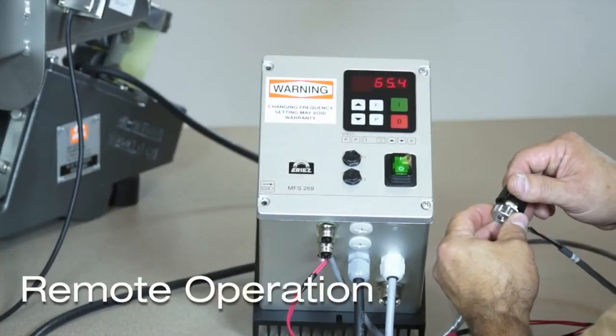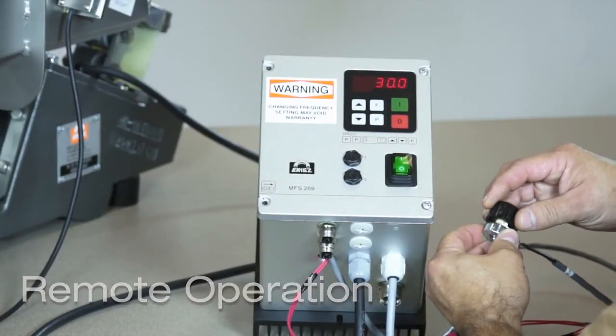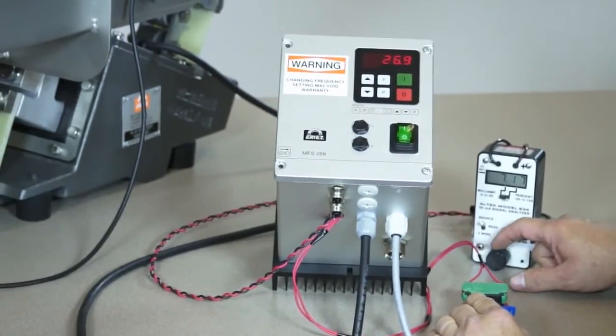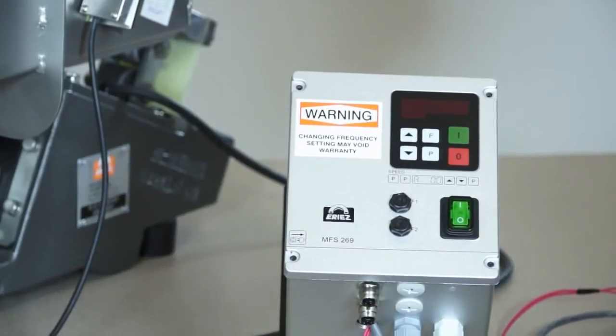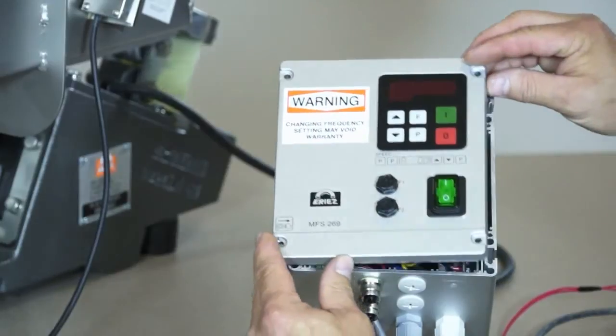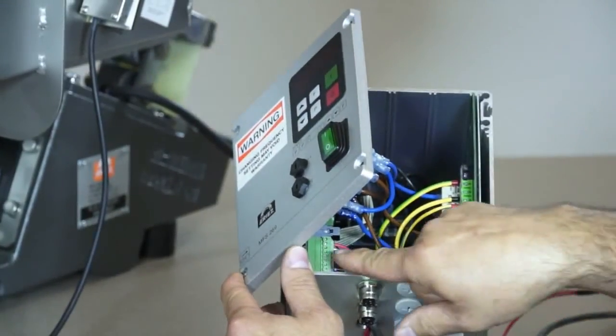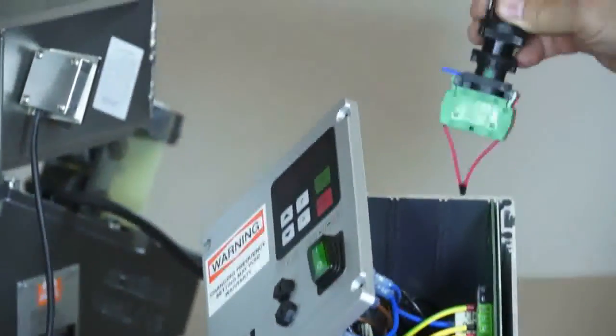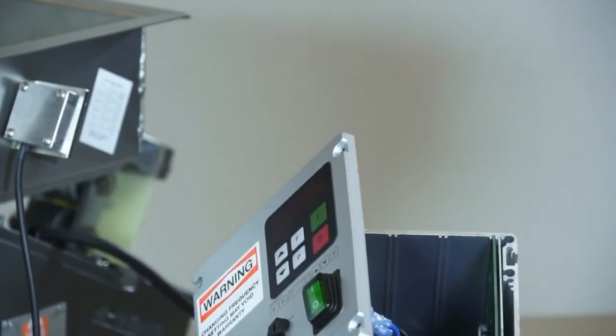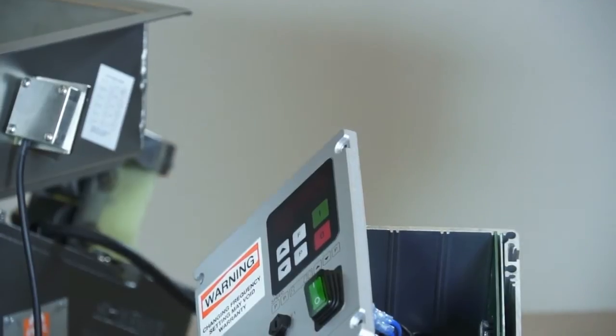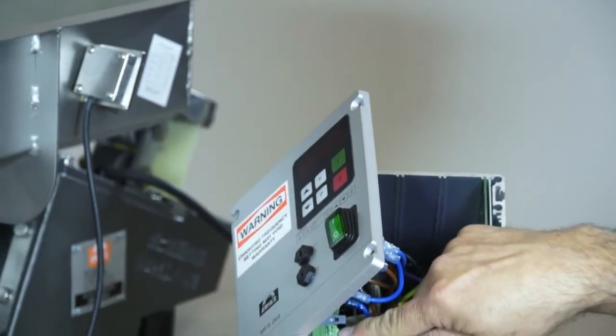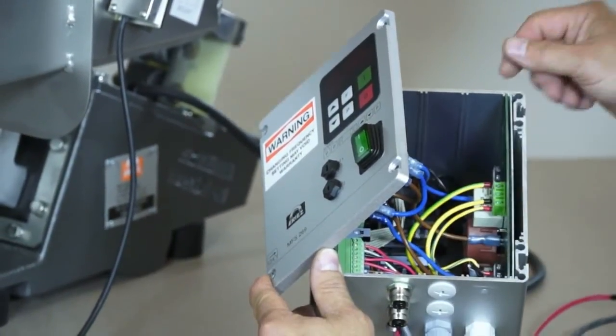In this section, we will demonstrate the remote operation of an Erie's G-Series feeder control. Refer to the schematic at the end of the operations manual. I have removed the jumper between terminals 5 and 6 and replaced it with the switch contact. I also added a 10,000 ohm potentiometer at terminals 7, 8 and 9.